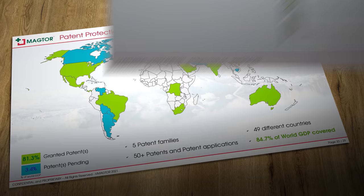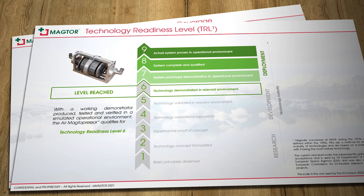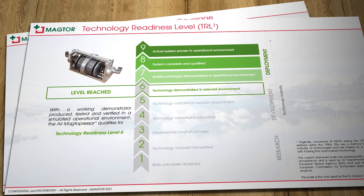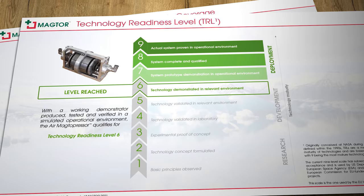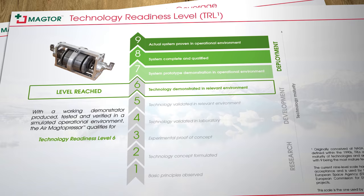A well-accepted gauge of any new technology's development progress is the nine-step technology readiness level, or TRL ladder, developed by NASA in the 1970s. As of August 2021, Magtor are at level six on the ladder and they've now reached the stage of development where they're ready to work with mass production partners to get their Magtapressors and Magtapumps deployed worldwide.